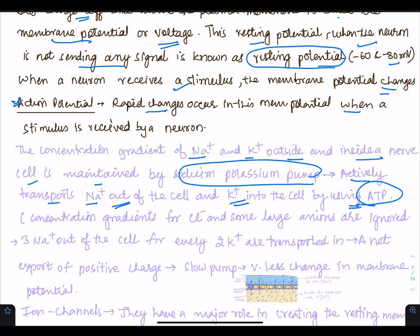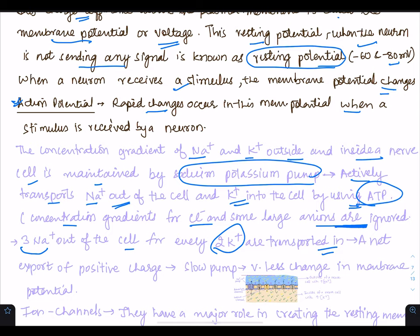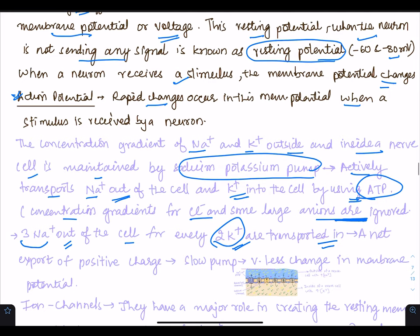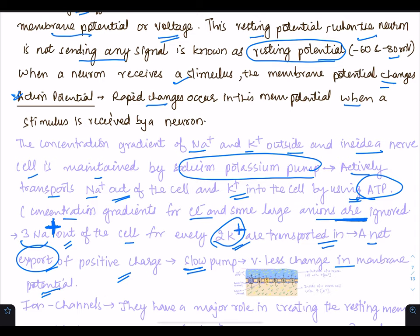This pump works by using ATP. Concentration gradients for chloride and some large anions are ignored, as their effect is so little. This pump transports three sodium ions out of the cell for every two potassium ions transported in — a net export of positive charge. There is a net export of one extra positive charge outside the cell, but this pump is slow, so very little change in membrane potential occurs from it.